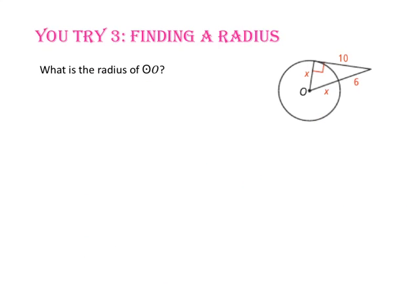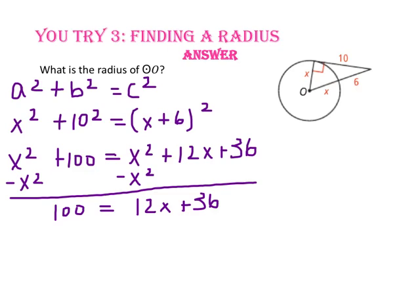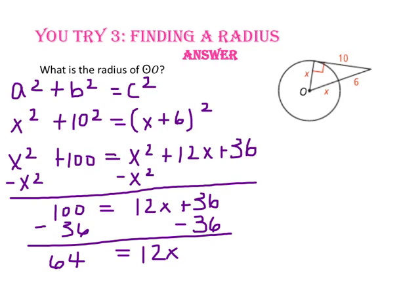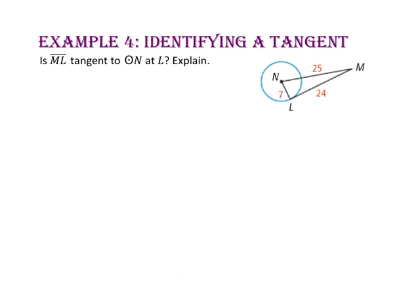Pause the video and do you-try number 3. What is the radius of circle O? We notice that we have a right triangle with one leg X, the other leg 10, and the hypotenuse 6 plus X. Using the Pythagorean theorem, substituting X for A, 10 for B, and X plus 6 for C, squaring gives X squared plus 100 equals X squared plus 12X plus 36. Subtract X squared from both sides: 100 equals 12X plus 36. Subtract 36: 64 equals 12X. Dividing both sides by 12, X equals approximately 5.3 repeating. So the radius of circle O is approximately 5.3.